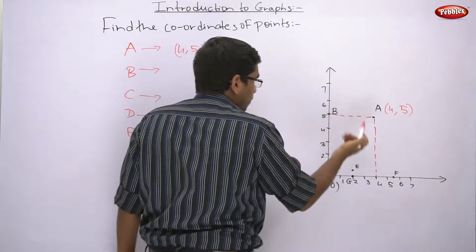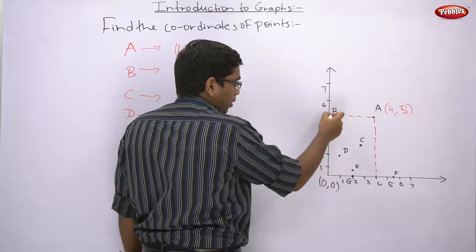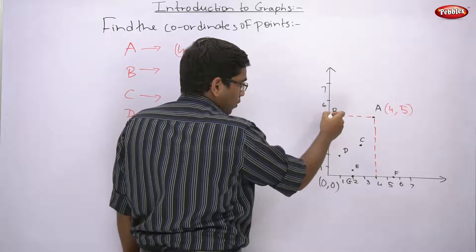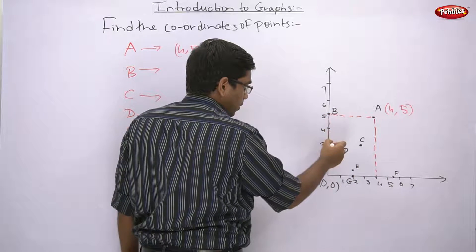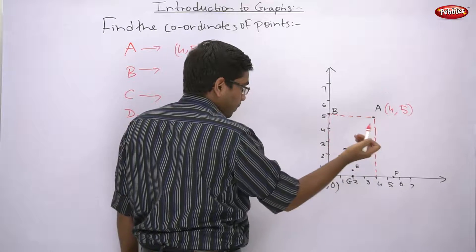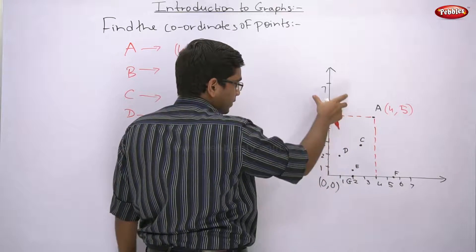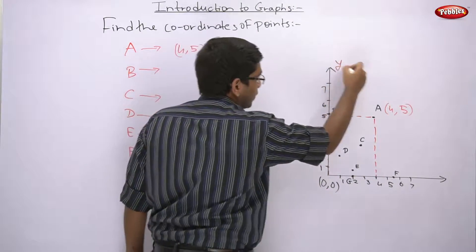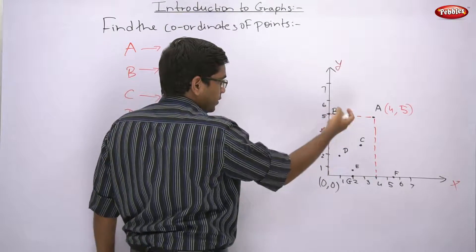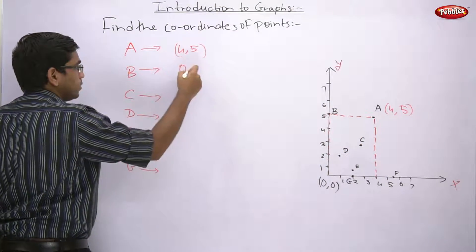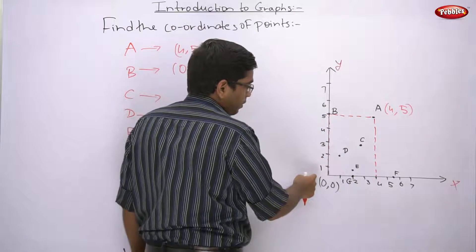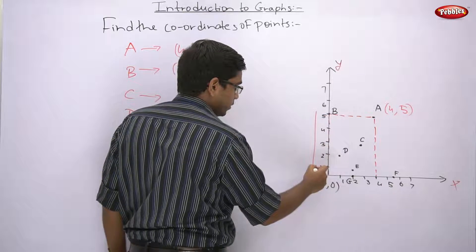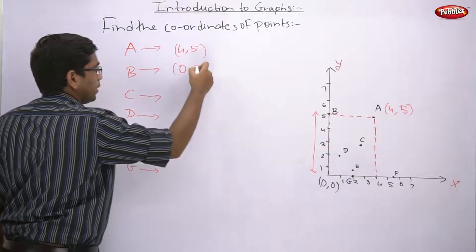For B: since B already lies on the y-axis, we draw only a vertical line. The horizontal distance from origin is 0 because B lies on the y-axis, so x-coordinate is 0. The vertical distance from origin is 5, so y-coordinate is 5. Therefore B's coordinates are (0, 5).